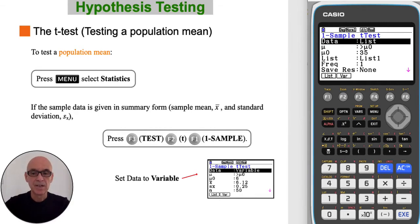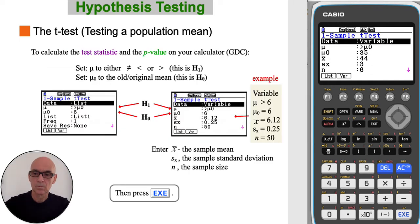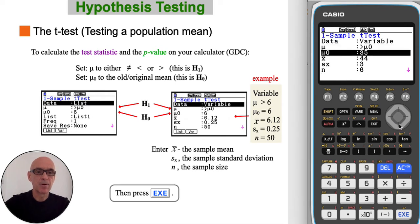Alternatively, if the sample data is given in summary form, with a sample mean and sample standard deviation, you would press F2, setting data to variable. Then scroll down and set the null hypothesis. In our example, that was equal to 6.